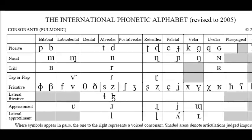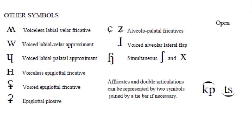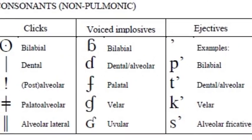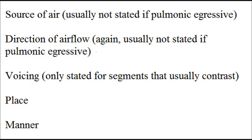Now that we've covered the basic descriptions of the consonants in the world's languages, let's wrap up by going over how to state phonetic descriptions. Sounds are described in the following order: the source of air, usually not stated if pulmonic egressive; the direction of airflow, again, usually not stated if pulmonic egressive; voicing, only indicated for segments that usually contrast for voicing; place; and manner.